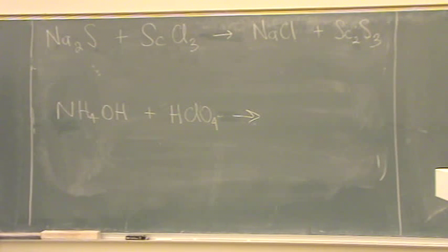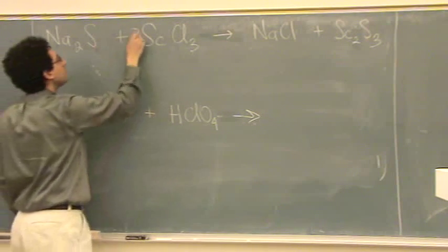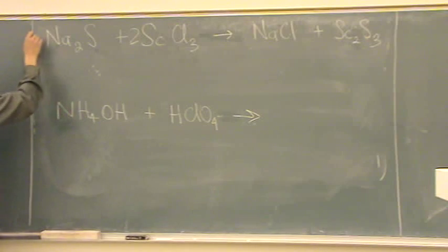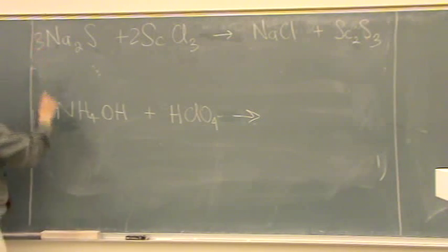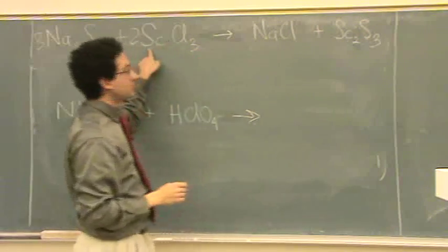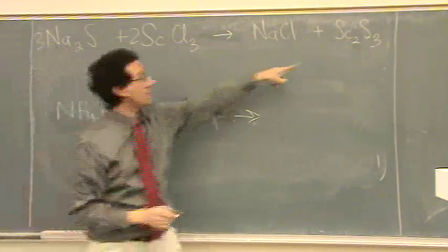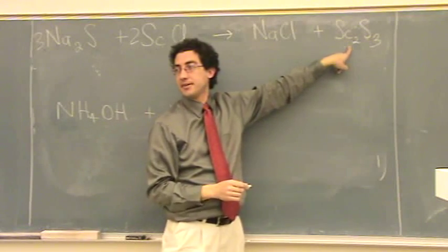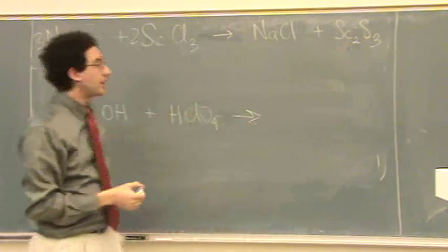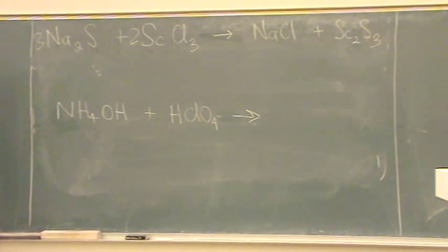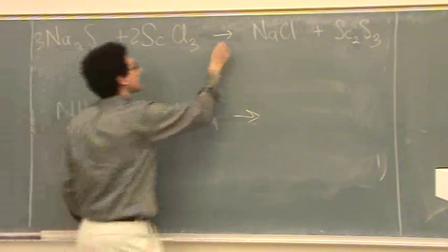We'll balance it and then worry about the solubility rules. Let's see. This is more painful than I was hoping for. Two and three. I get that because there's two scandiums, three sulfurs. I picked this one because it looks the most complicated with the subscripts. Start there. And then for the sodium chloride, it looks like there'll be six.